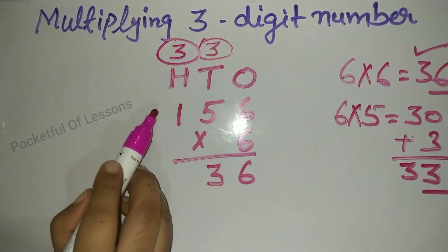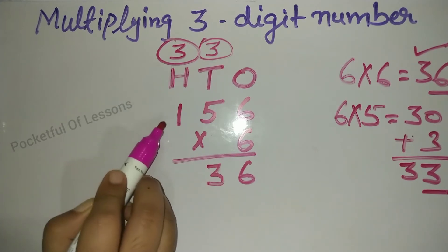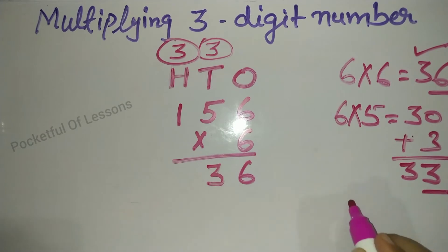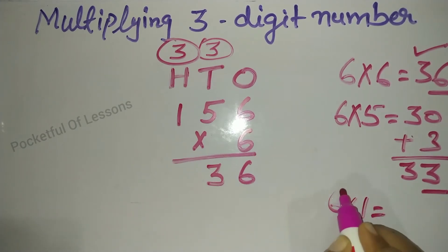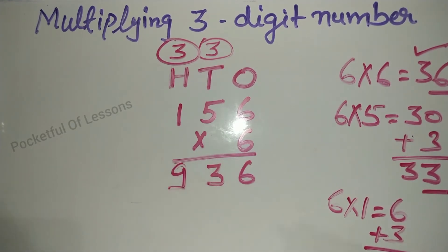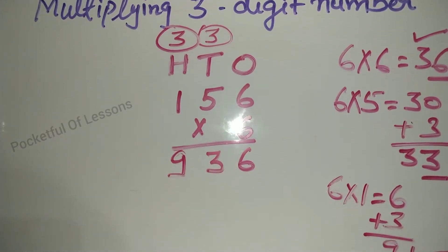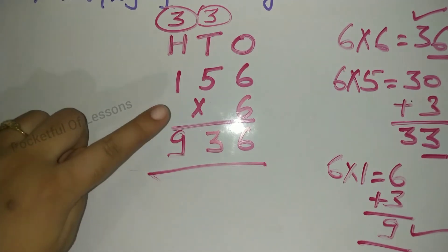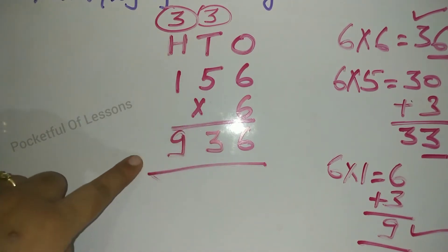Now, 6 table added 1 time — that is 6. So 6 into 1 is 6. Now in 6 we add the carried 3, so we get 9. We write 9 here. So here is the answer for single digit multiplication. When we do single digit, this is your answer.